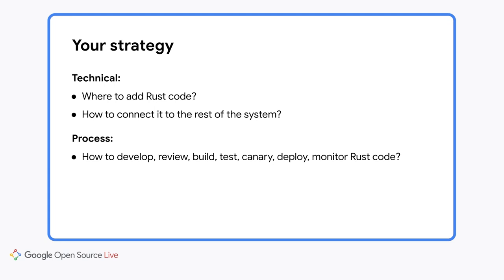Does your team have enough people with Rust expertise to mentor engineers just starting to learn Rust? Once the code is written, we need build and test tooling. Does your build system support Rust at all? How do Rust unit tests fit into the testing workflow? Can your engineers run Rust and non-Rust tests with just one command? And how about your production deployment, canarying, and monitoring tools — do they support Rust binaries? Can they collect monitoring information from Rust code? You should work through all of these questions before adding the first line of Rust code to your shipping product.